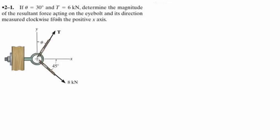If the angle beta is 30 degrees and the force T, right here, is 6 kN, determine the magnitude of the resultant force acting on the i-bolt and its direction measured clockwise from the positive x-axis.